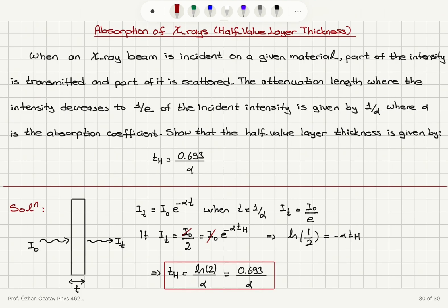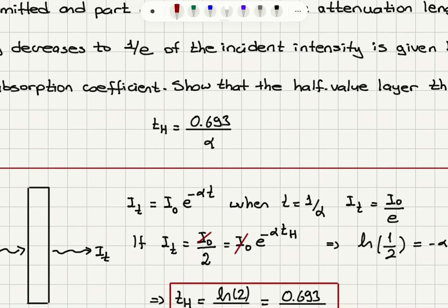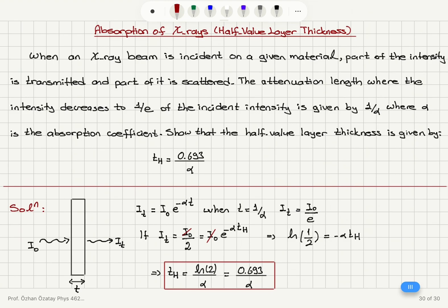In summary, we looked at the transmitted beam emerging out of a material with thickness t when there is an incident beam with intensity I₀. The transmitted intensity decays exponentially with thickness as I₀ e to the minus alpha t. The attenuation length where the intensity decreases to 1/e of its incident intensity is 1 over alpha. When the thickness is 1 over alpha, we have e to the minus 1, so I₀ divided by e is the transmitted intensity.